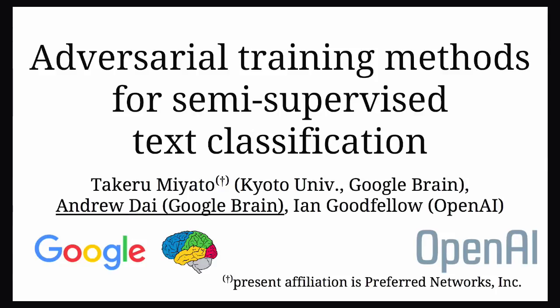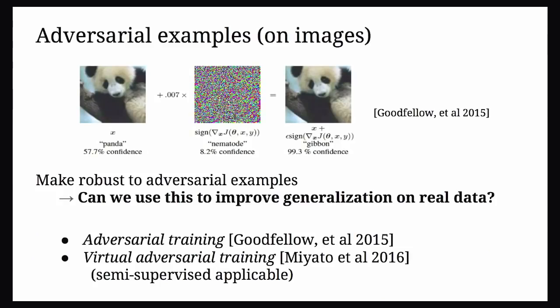Adversarial examples were covered about three spotlight presentations ago. Basically, we have something that looks like noise to humans but causes the classifier to misclassify — in this case a panda becomes a gibbon by adding a small quantity of random-looking noise. Training with this objective makes the model resistant to these adversarial examples, but in the image case it often doesn't help the model generalize on real data.